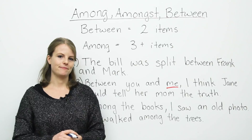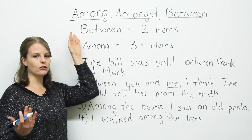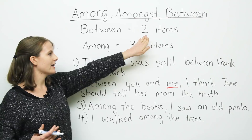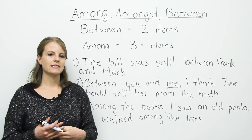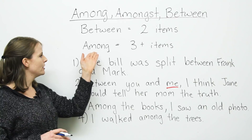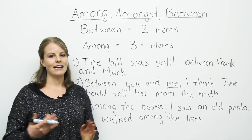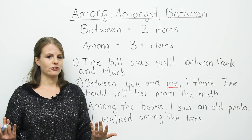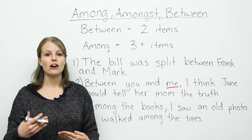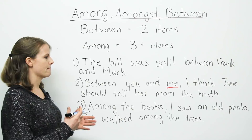A lot of teachers — you may have heard this before — often say that we use between when we're talking about two of something: maybe two people, two items, two animals, two objects. And we use among when we're talking about three or more items — again, it can be people or objects. So this is what a lot of teachers say. And in general, this rule does work. But there are many exceptions to this rule, which I will talk about in the second part of this video.